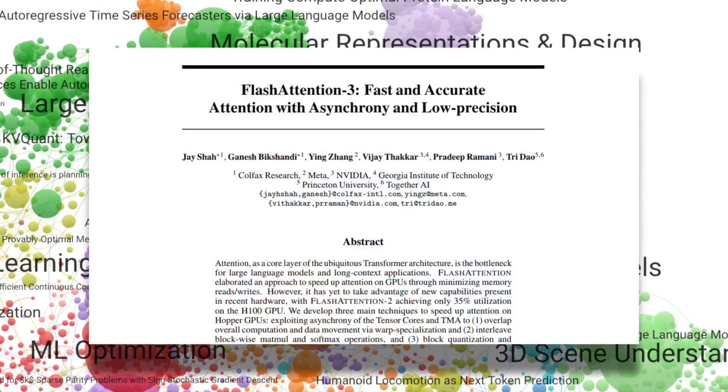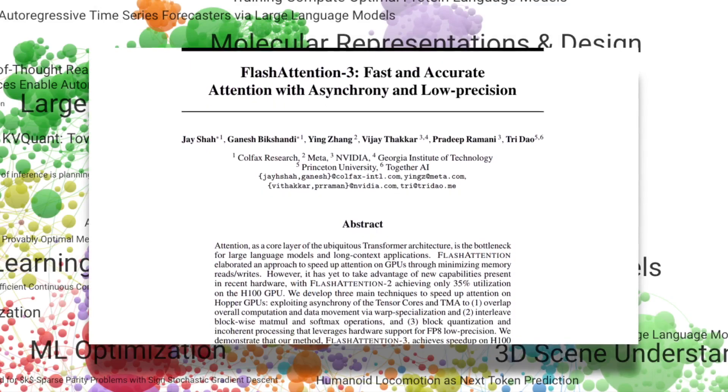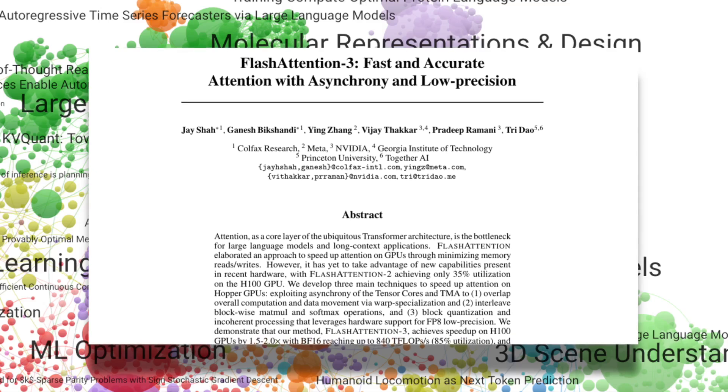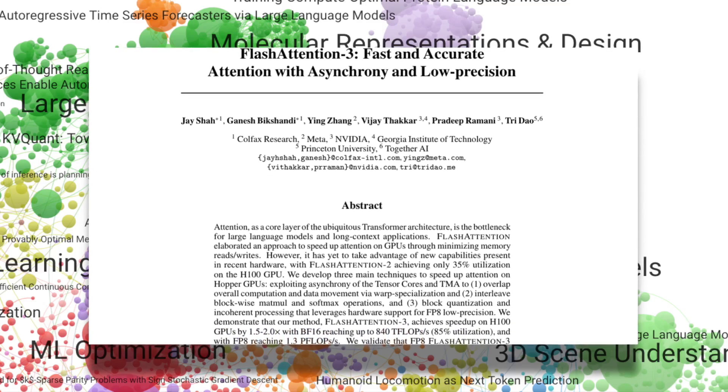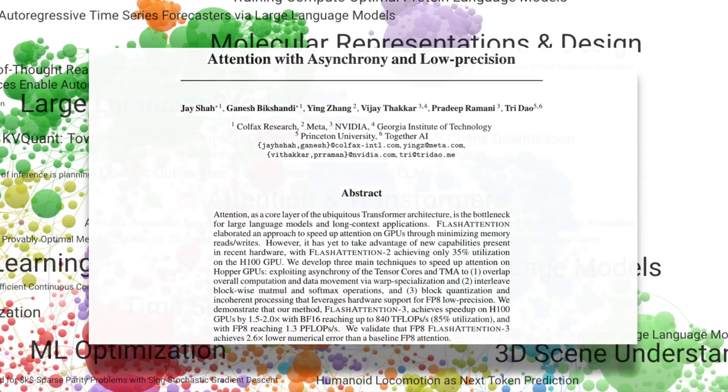Speaking of attention, FLASH Attention 3 pushes the envelope with an asynchronous, low-precision mechanism that significantly speeds up attention computations on GPUs, a big step forward for efficient training and inference.